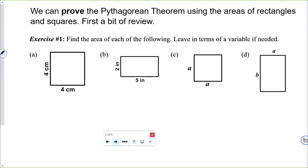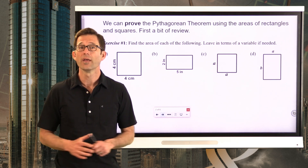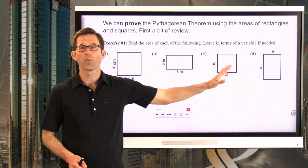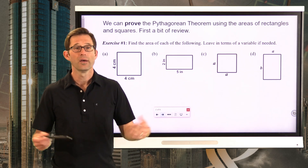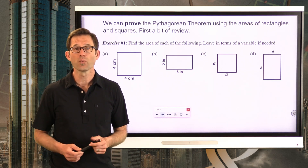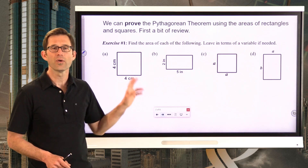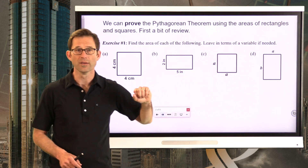Find the area of each of the following. Leave in terms of a variable if needed. This is simple enough — we can find the area of each one of these squares or rectangles by just multiplying length times width. It's that simple.